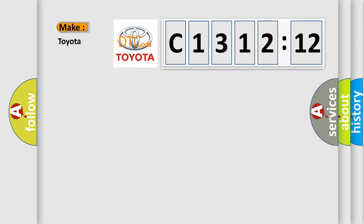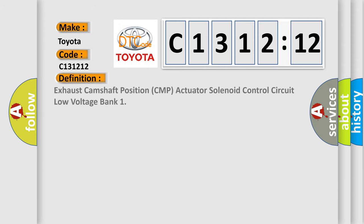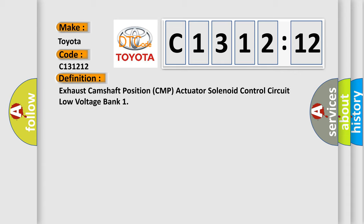So, what does the diagnostic trouble code C131212 interpret specifically for Toyota car manufacturers? The basic definition is exhaust camshaft position CMP actuator solenoid control circuit low voltage bank.